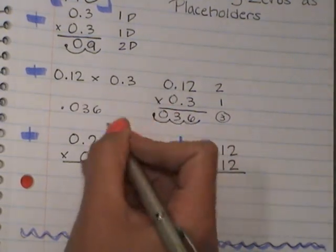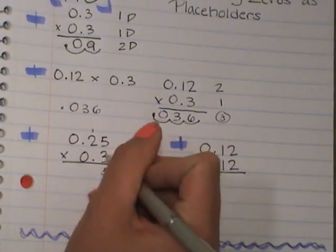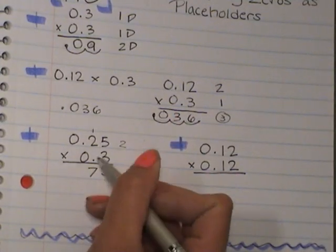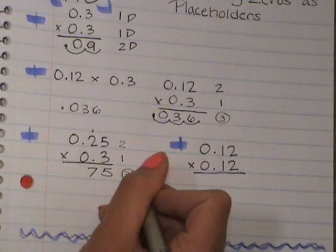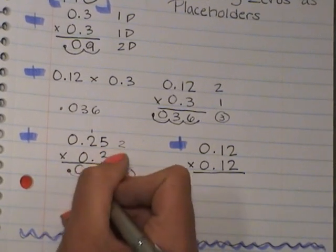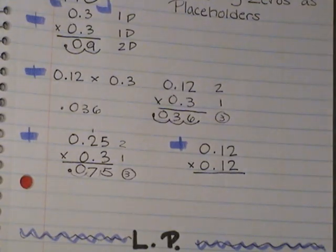So I'm going to start: 3 times 5 is 15, 3 times 2 is 6 plus 1 is 7, and I have 1, 2 here, 1 behind my decimal point here, so I have to move it 3 times, 1, 2, 3. So my answer is 75 thousandths.